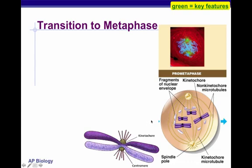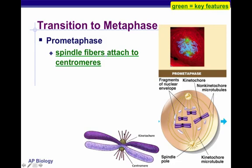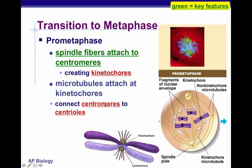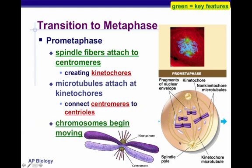Transitioning into prometaphase: spindle fibers attach to the centromeres, visible on the enlarged purple chromosome. When the spindle fibers attach to the centromeres, we change the name to kinetochore — it's still technically a centromere, but once attached to the spindle fibers it's called a kinetochore. Microtubules attach at kinetochores, connecting centromeres to the centrioles.